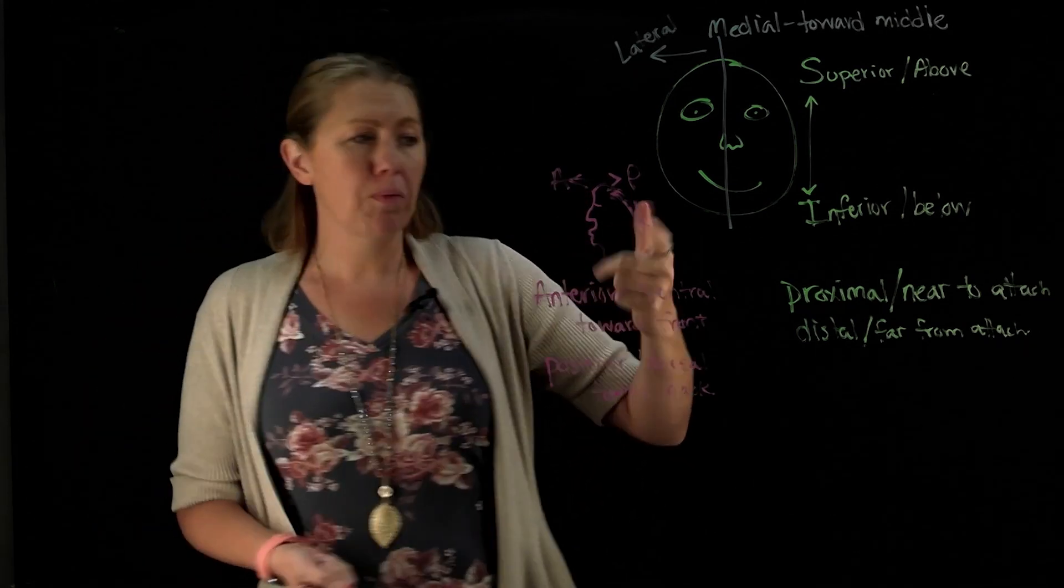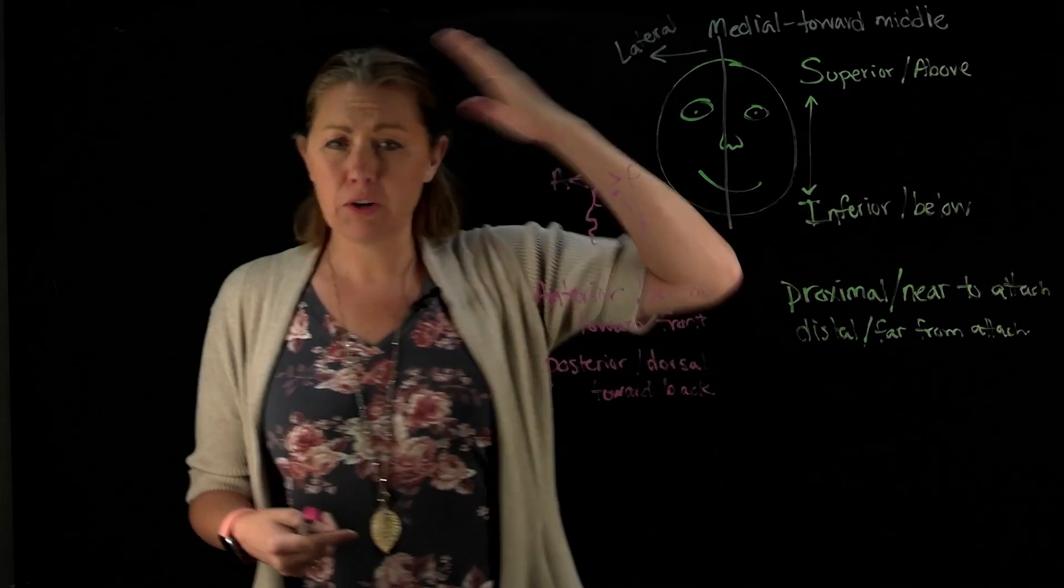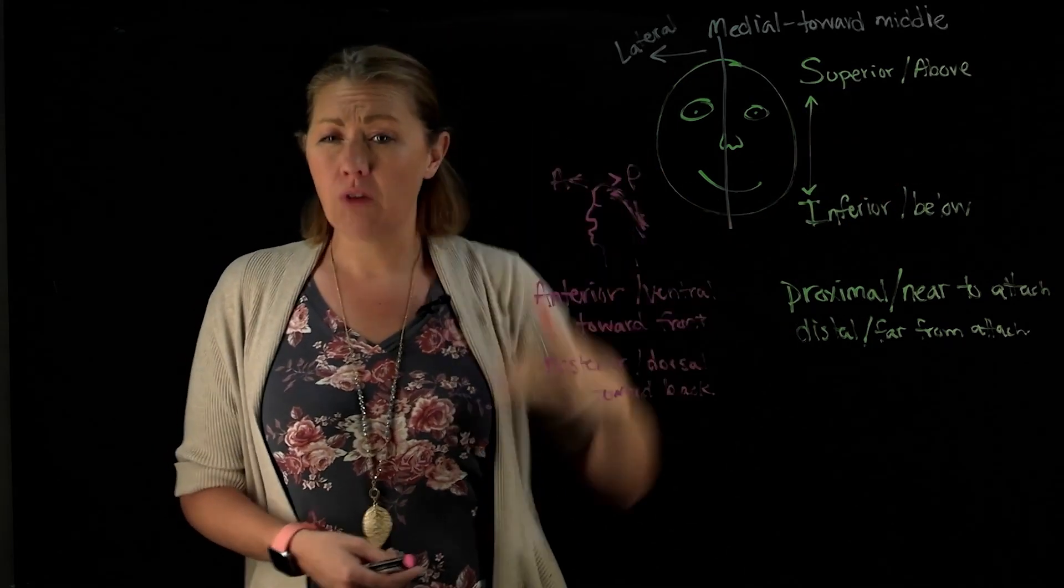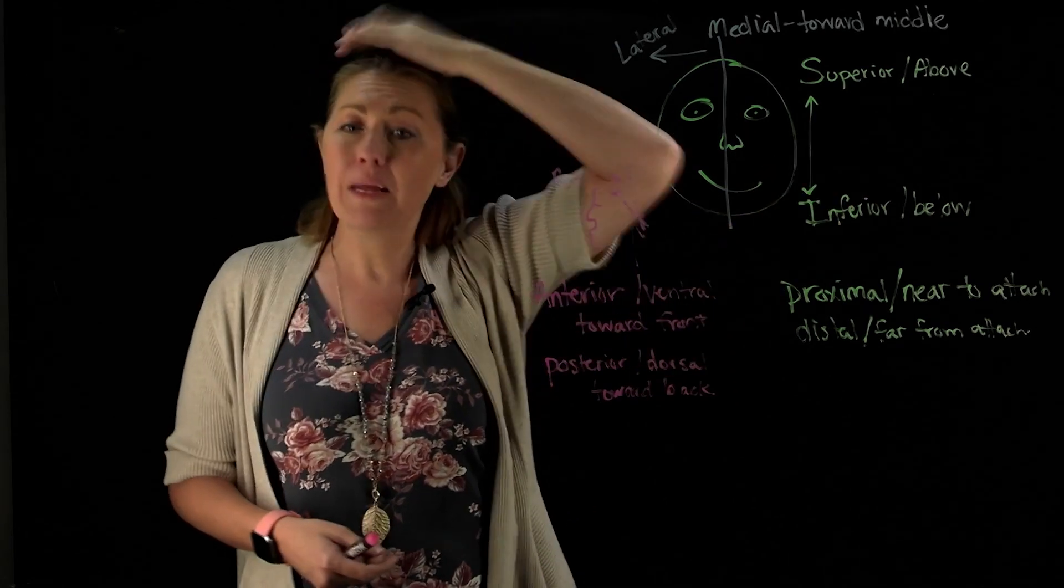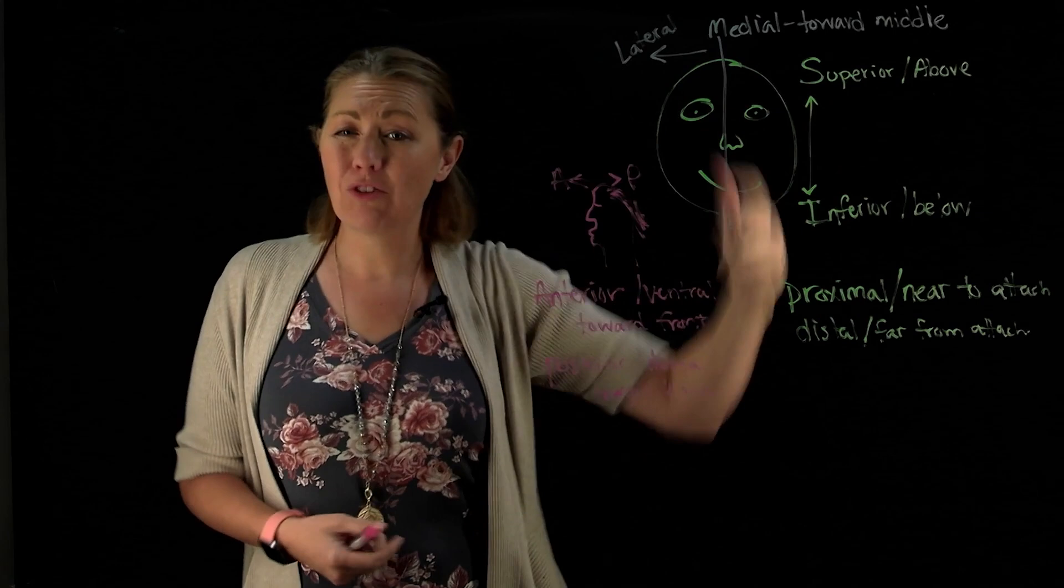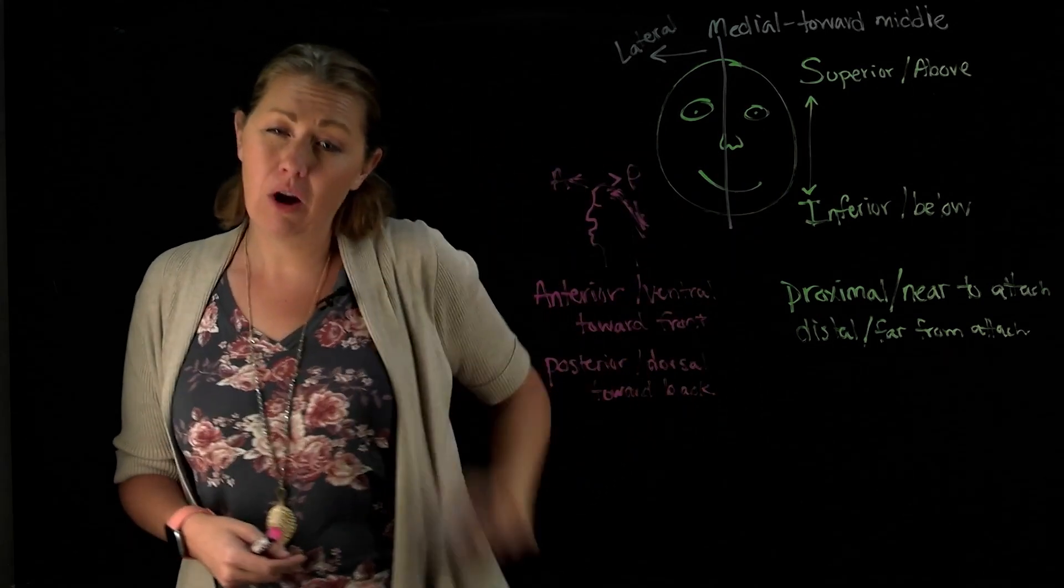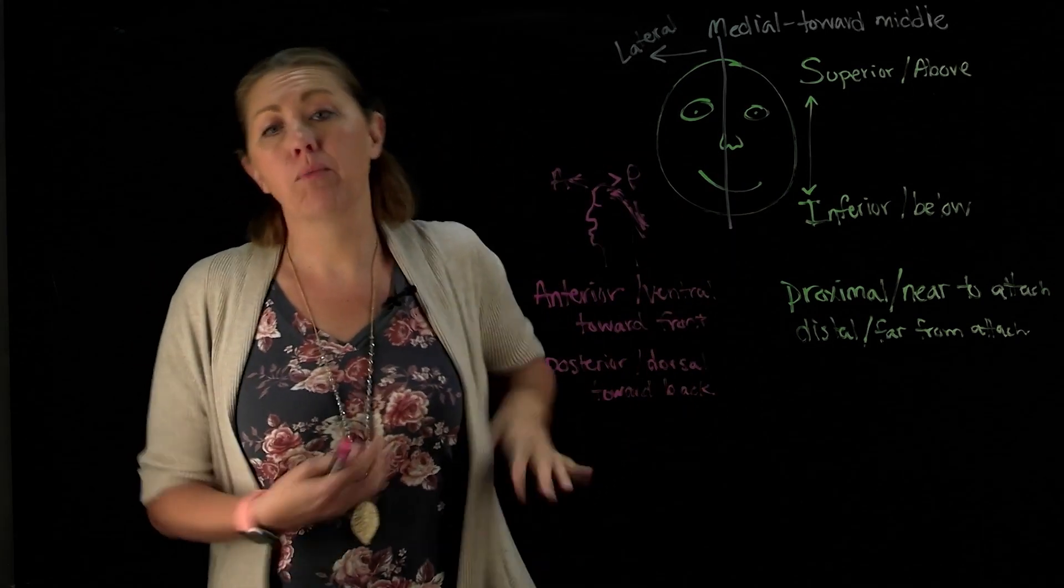Another alternative term we should probably talk about here when we look at superior and inferior going up and down is cranial versus caudal. Sometimes you might see cranial use for superior, meaning towards the cranium, towards the head. Caudal actually means tail. So if you're talking about something mean caudal, you're talking about going down, you're talking about towards the tail.